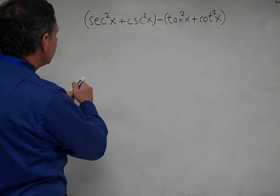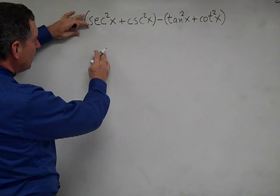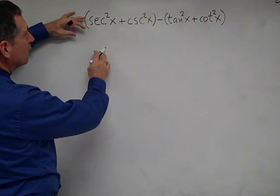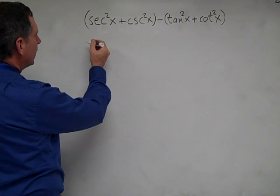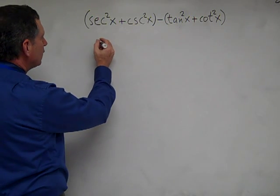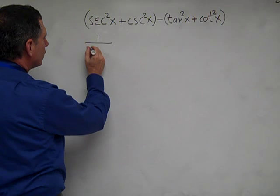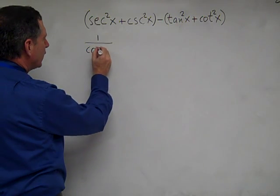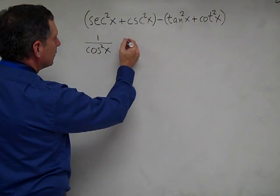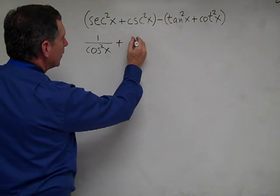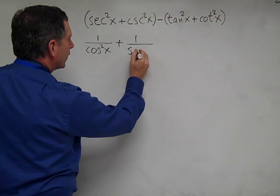The reciprocal identity says that secant of x is the reciprocal of cosine x. So secant squared x is going to be 1 over cosine squared x, and cosecant squared x is going to be 1 over sine squared x.